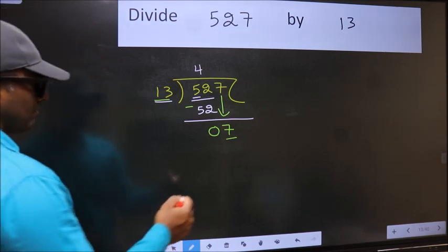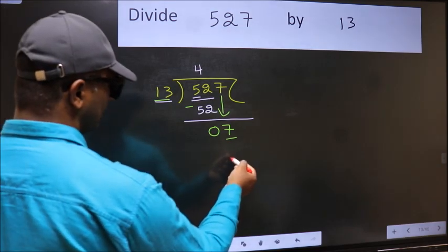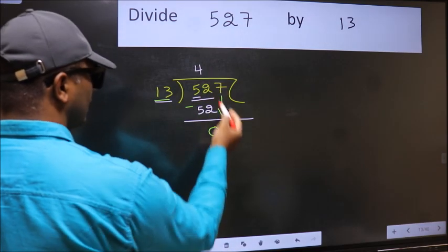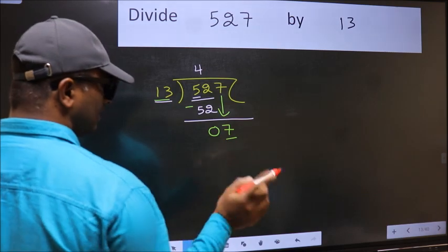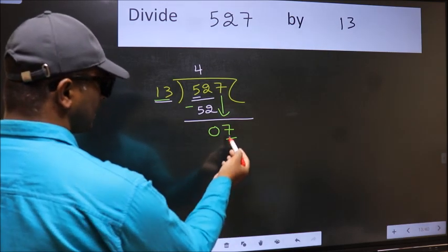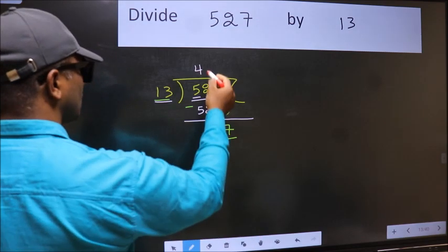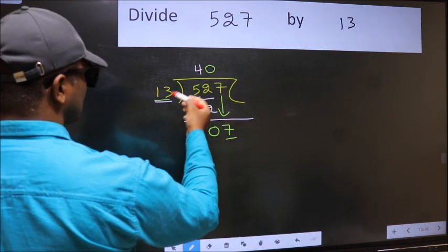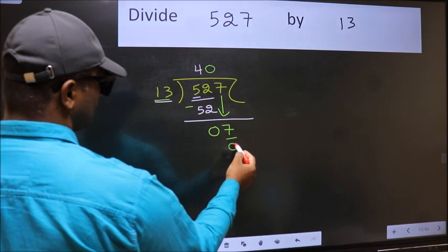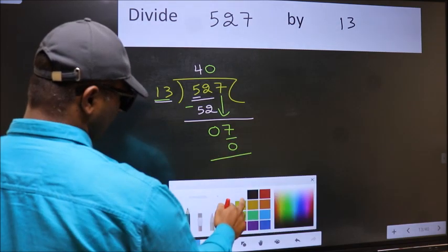If I take 1, we will get 13, but 13 is larger than 7. So what we should do is we should take 0. So 13 into 0, 0.